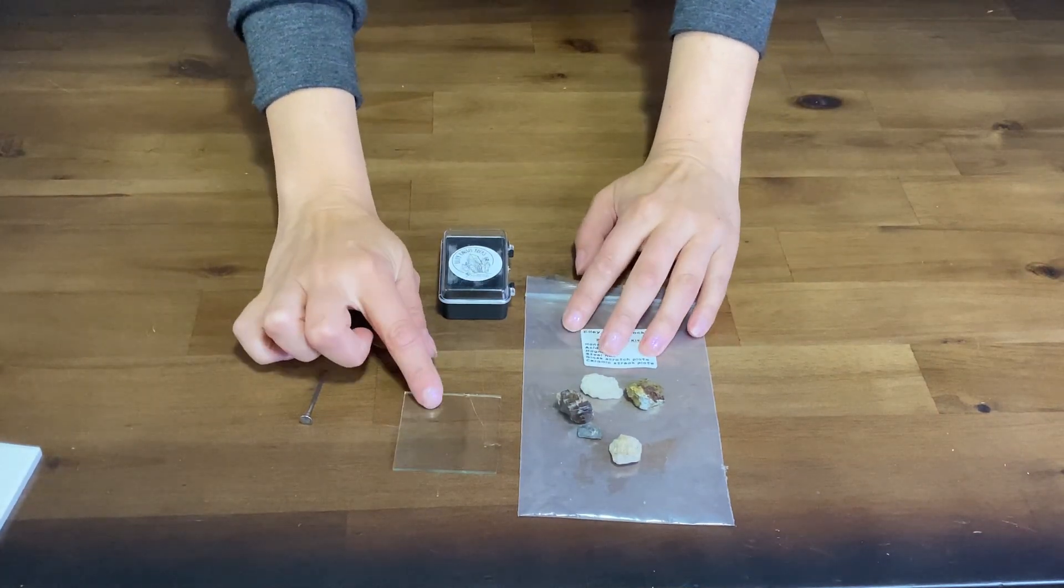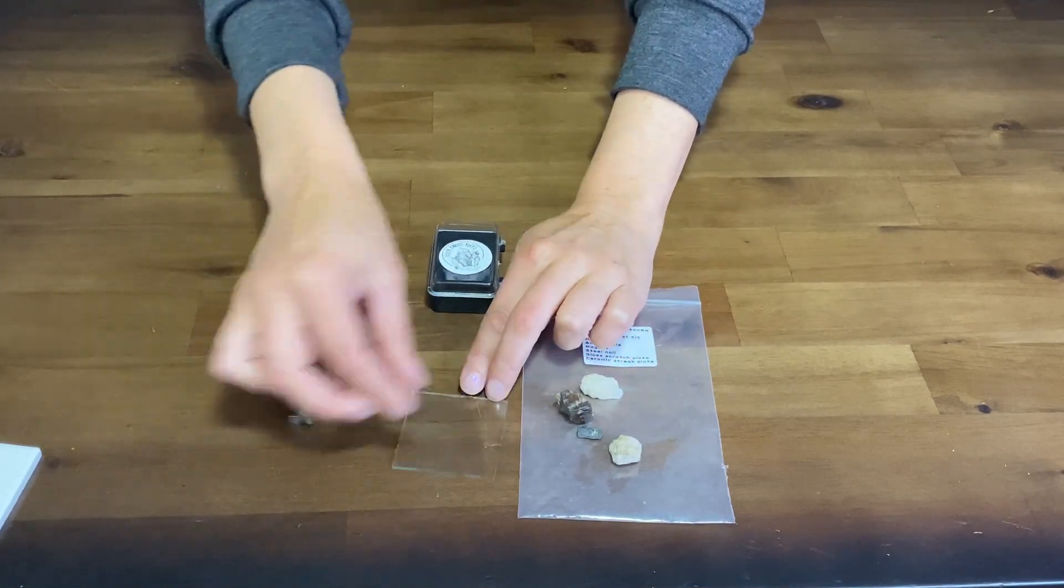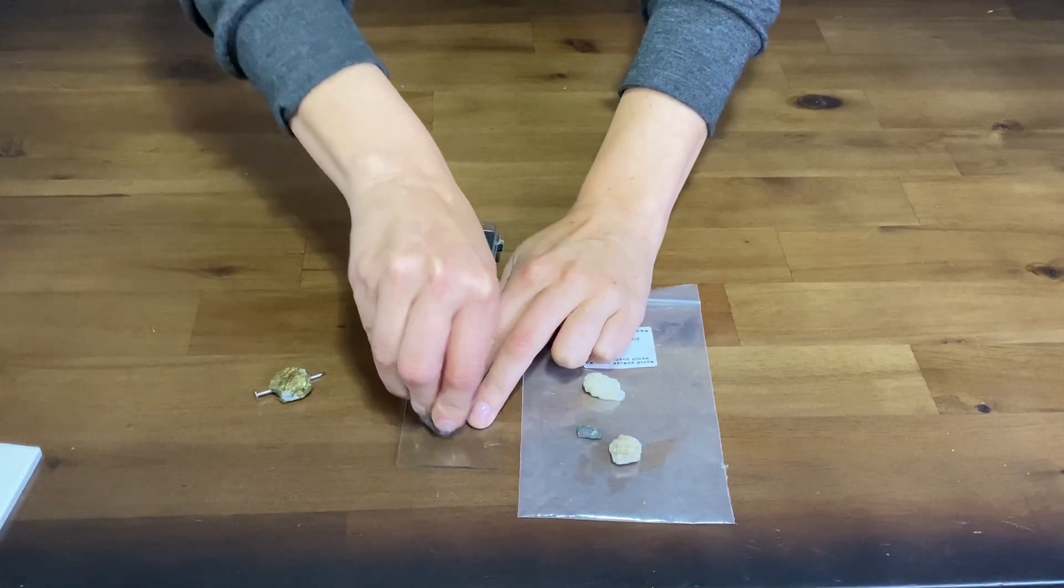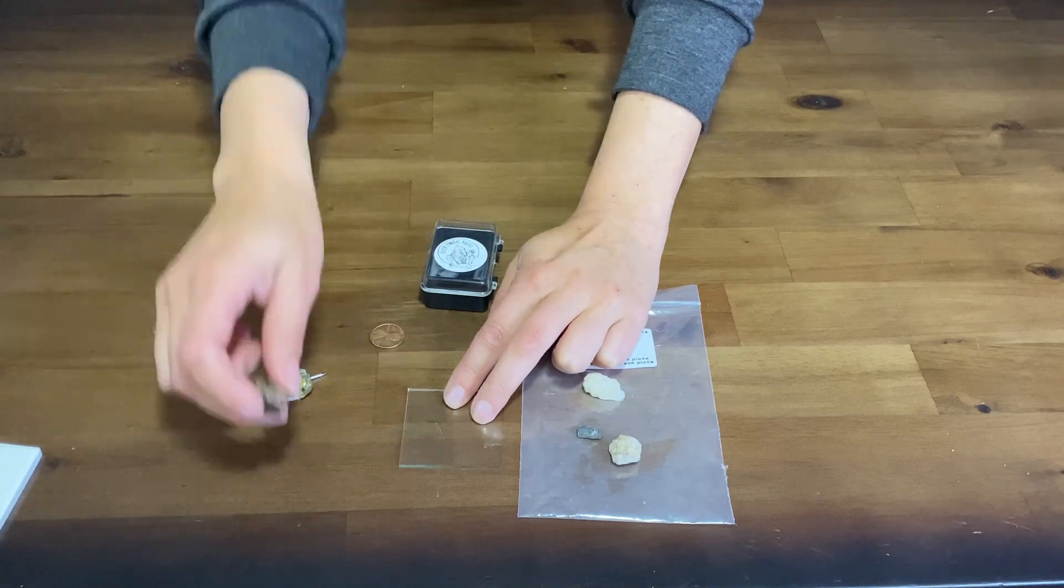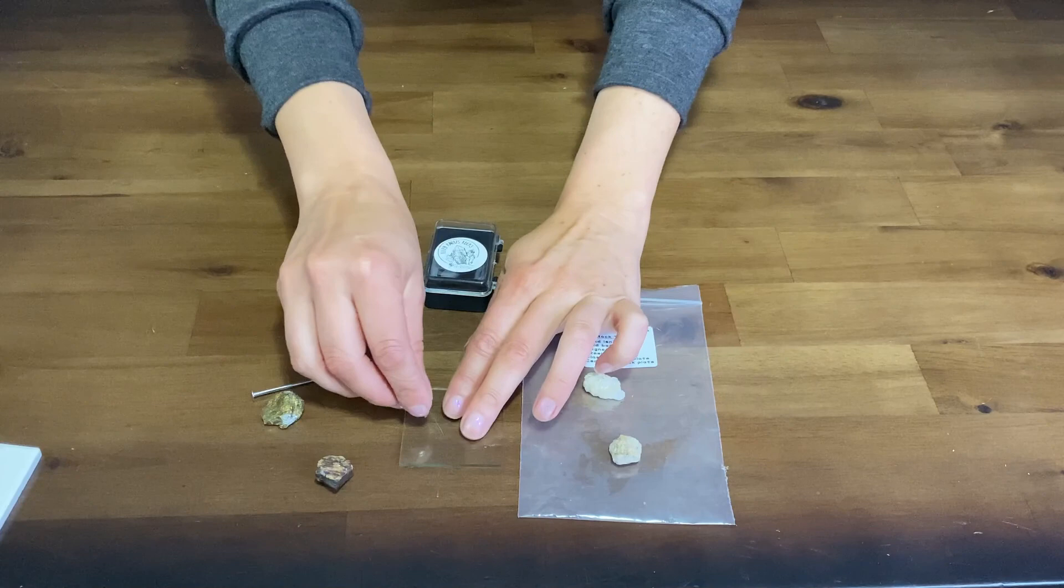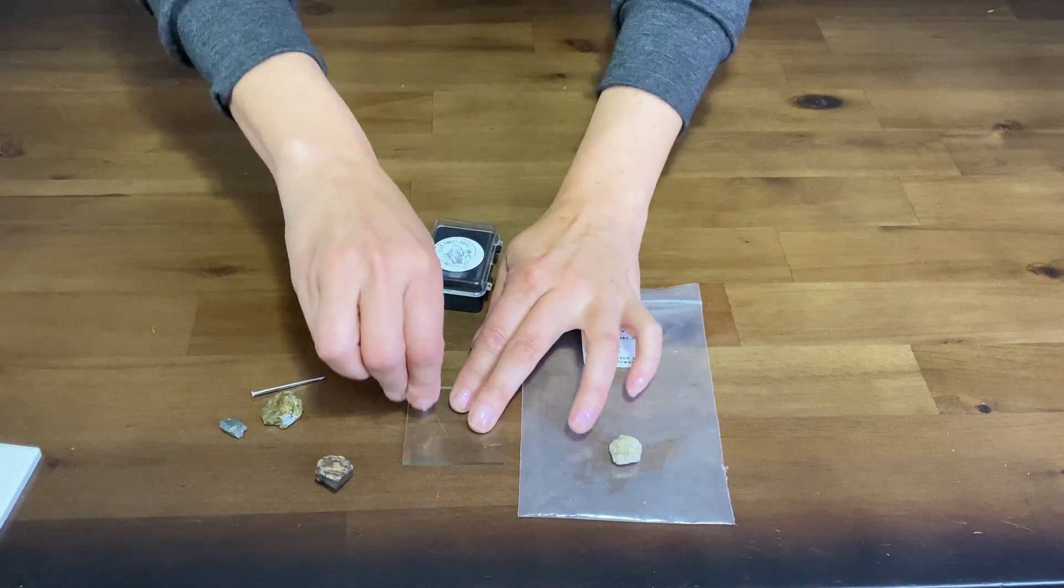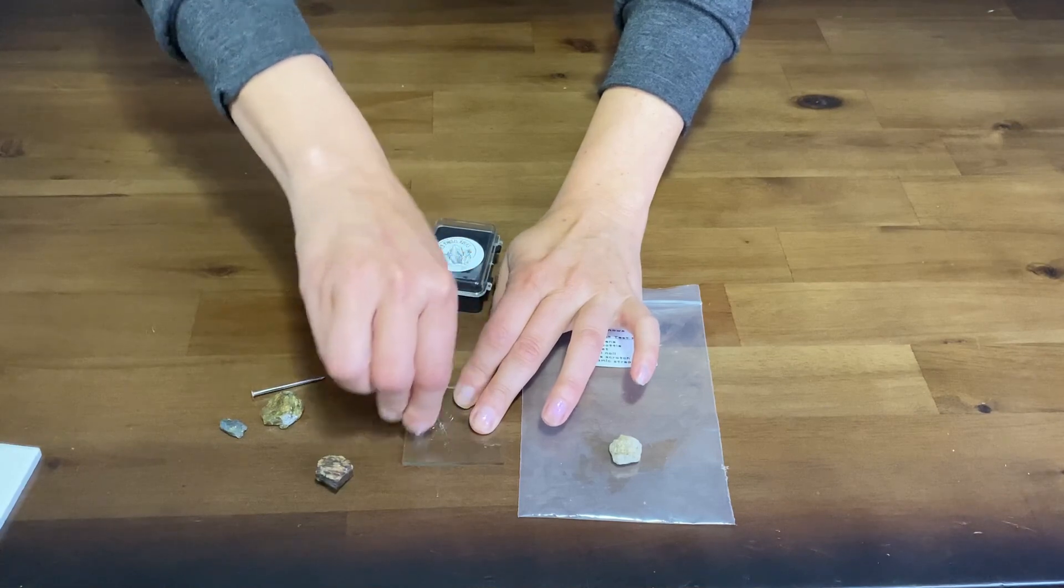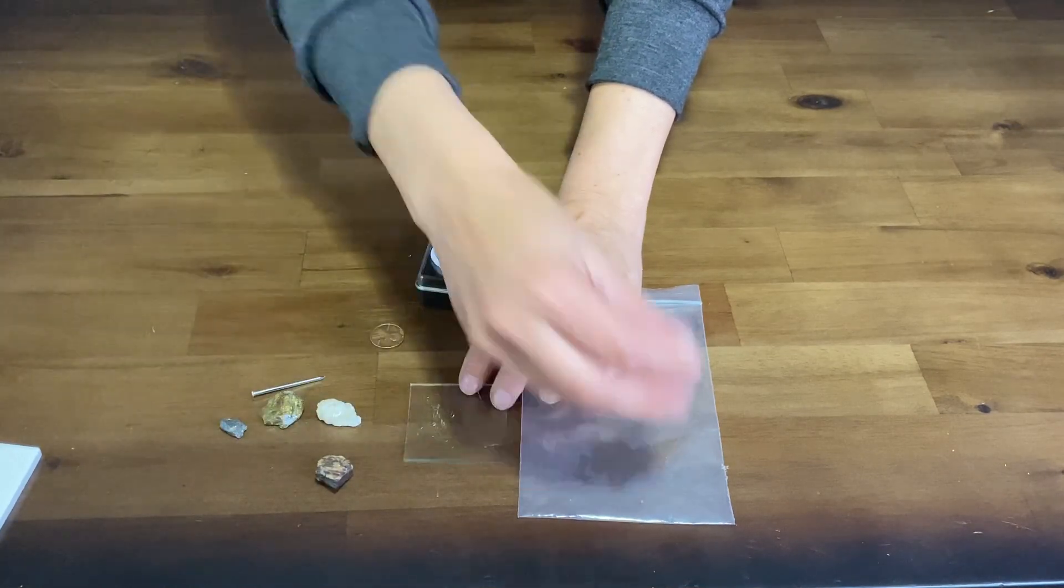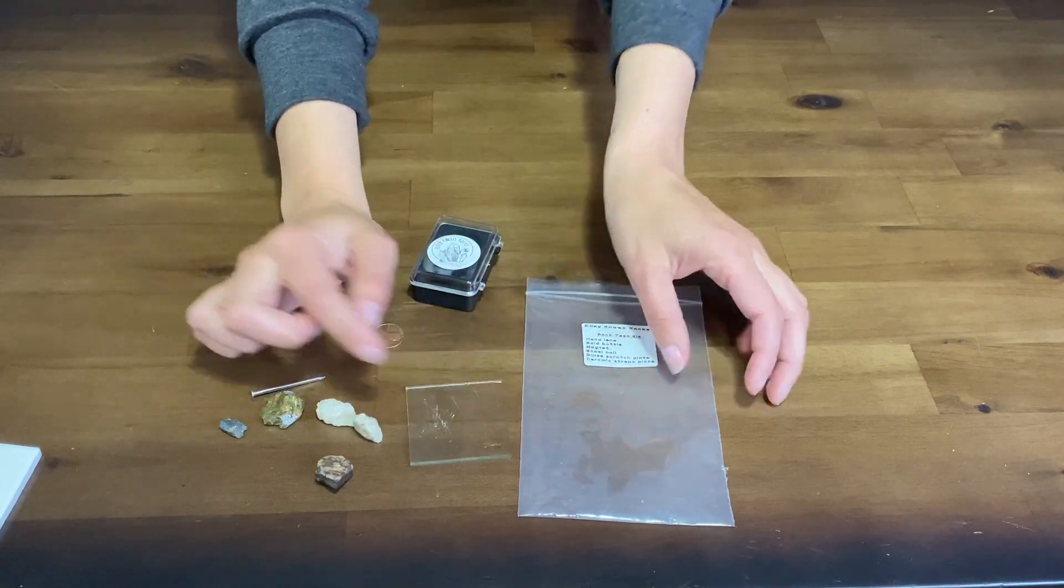Let's use the piece of glass first and we're going to use different minerals on it. Nothing happens. This is harder than a 5.5. This is softer. This guy, this is softer. This is definitely going to be softer. However, the scratch will scratch this mineral. Then this guy definitely scratches the glass plate.